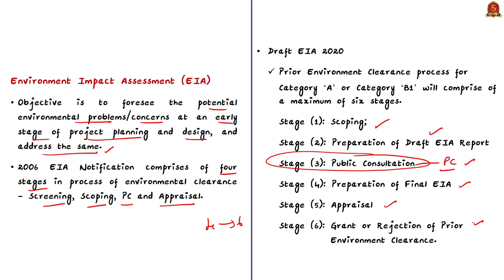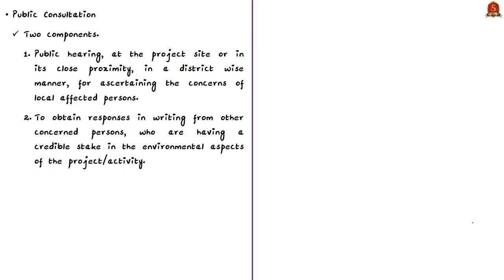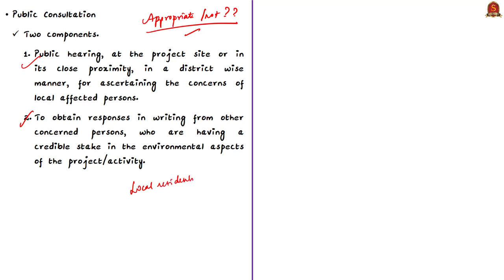Public consultation refers to the process which ascertains the project as appropriate by taking into account all the material concerns in the project or activity design, and settles the concerns of local affected persons and others who have a credible stake in the environmental impacts of the project. Anyone who is likely to be affected by the proposed project is entitled to know that the project is appropriate. Affected persons include local residents and associations including environmental groups.